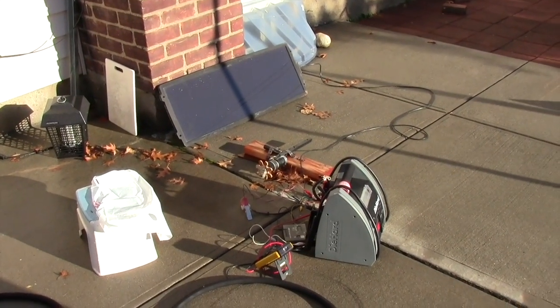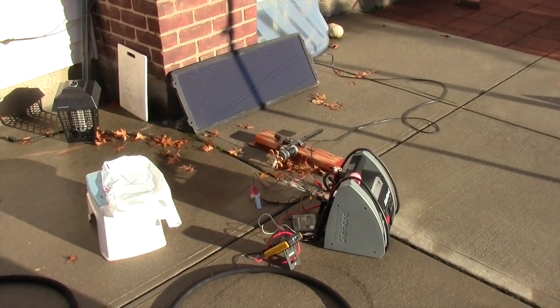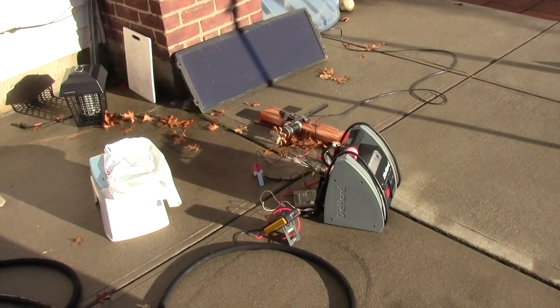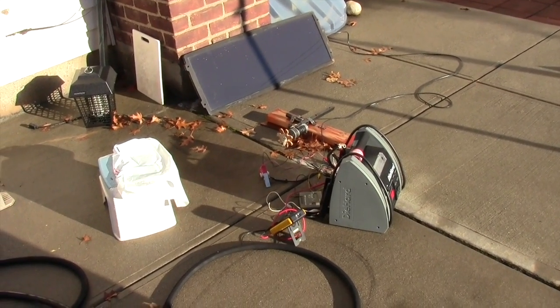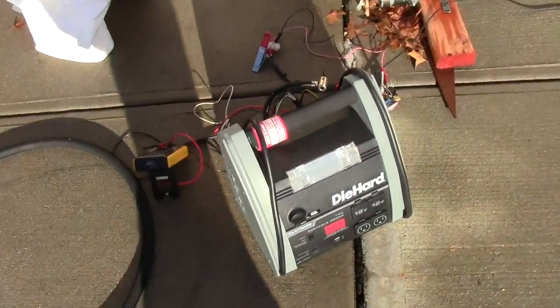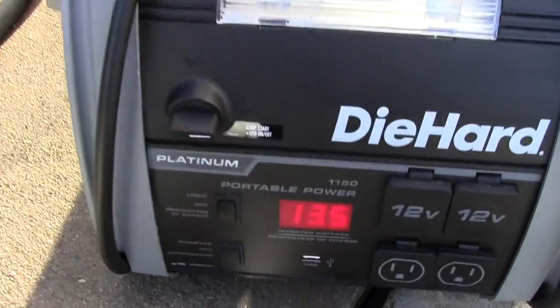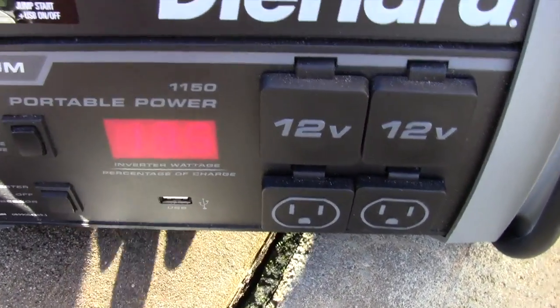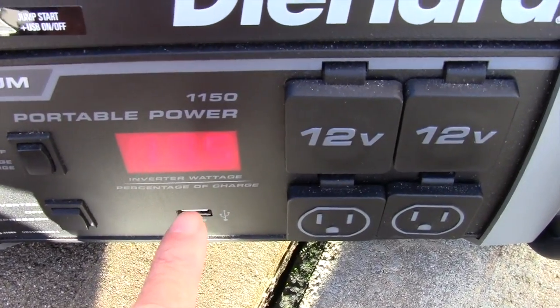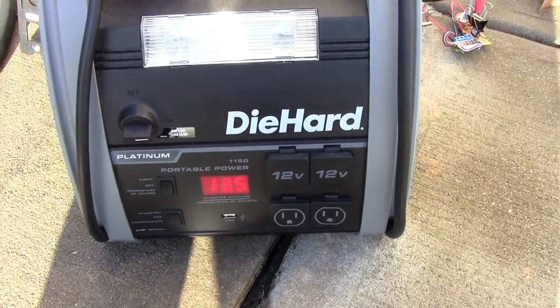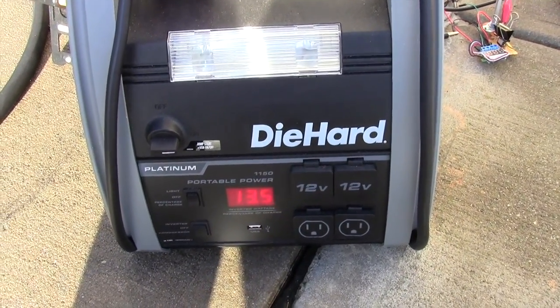So if you need something that will work without grid power, this LM317 you can put together for a couple of dollars and you won't overcharge your jumper or booster battery. You'll keep it at whatever setting. If you set the LM317 to 13.2, that's where it'll keep it and no higher. All right, thanks for watching.